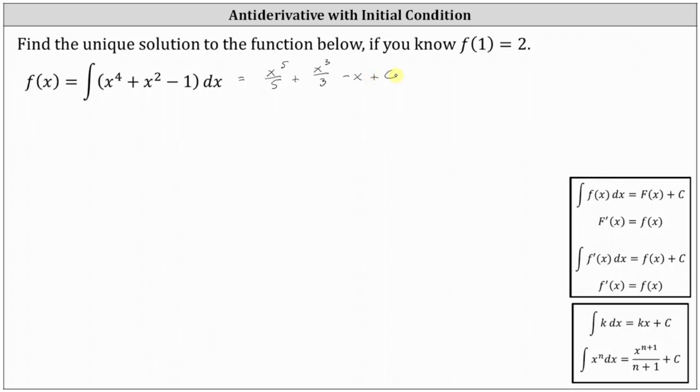Now we know the form of f of x is f of x equals one fifth x to the fifth plus one third x cubed minus x plus c.